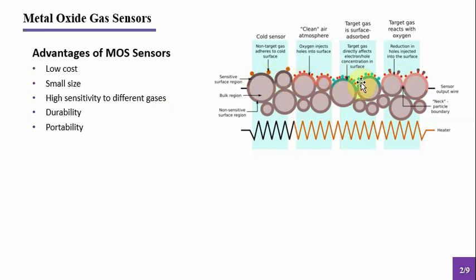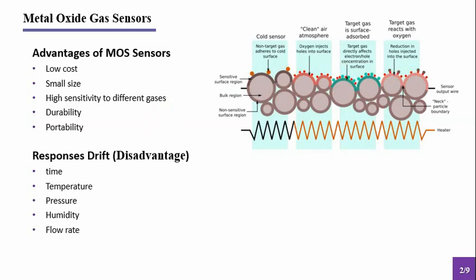But unfortunately, their responses drift over time and also change due to some environmental characteristics, such as temperature, pressure, humidity, flow rate, and so on. Such variable factors affect the interaction of gas molecules with the sensor surface and cause variations in sensor signals. And another challenging issue that causes response variation is location of the sensor related to the gas path.